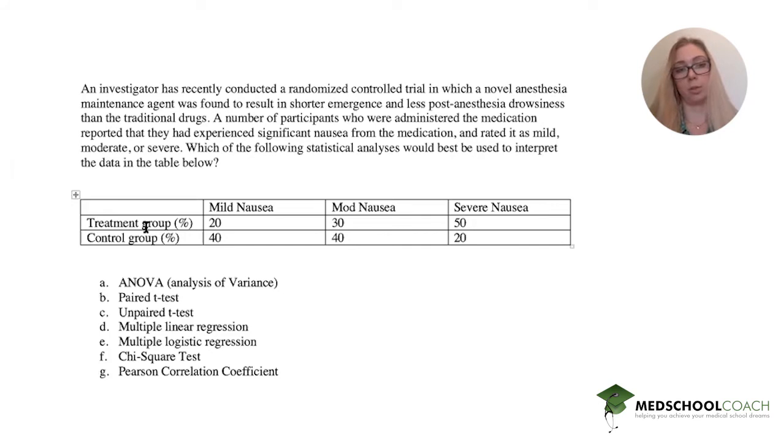And then the table shows you a treatment group and a control group and we're divided into mild nausea, moderate nausea, or severe nausea. And your options are ANOVA, which is analysis of variance, a paired t-test, unpaired t-test, multiple linear regression, multiple logistic regression, a chi-square test, and a Pearson correlation coefficient. That is a lot of options.